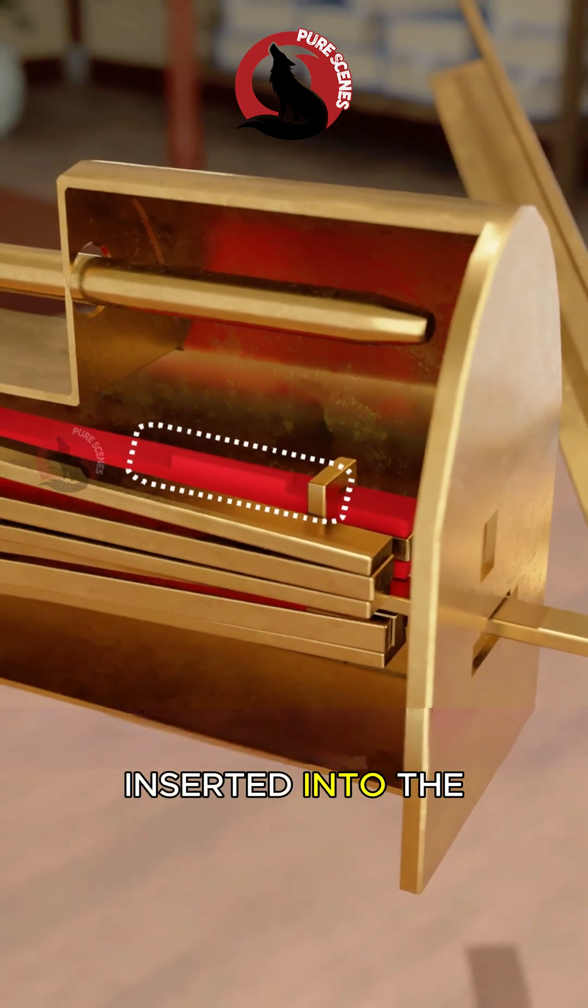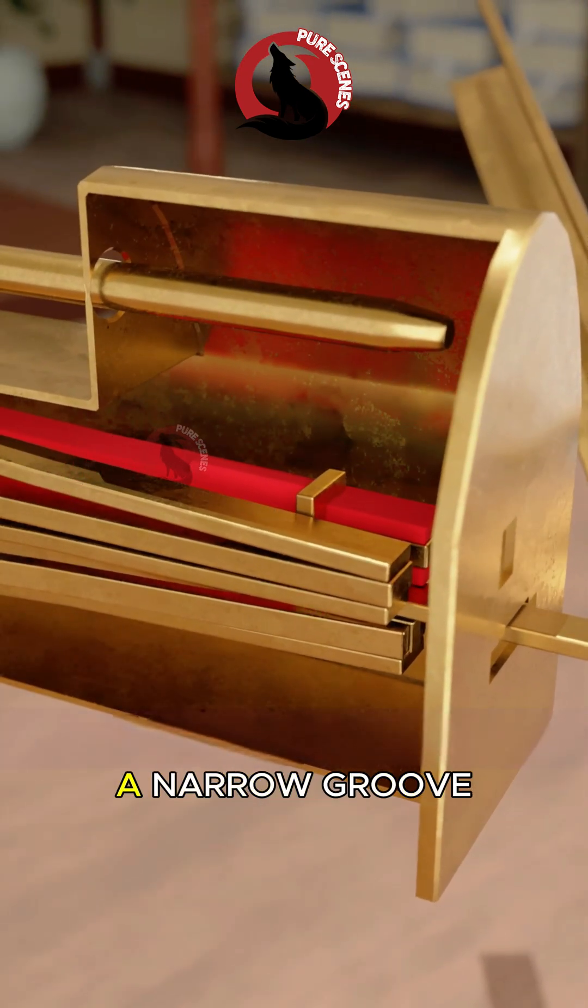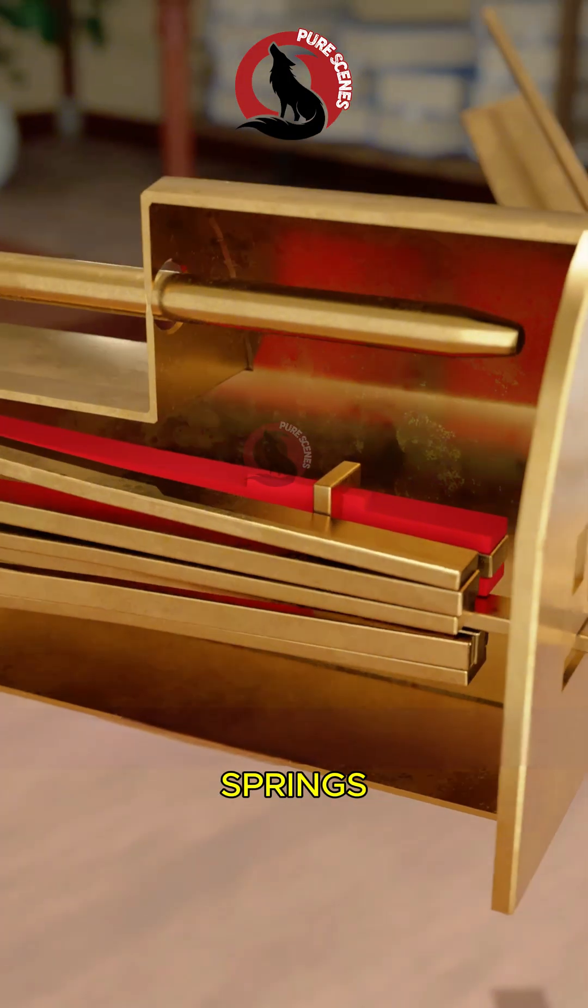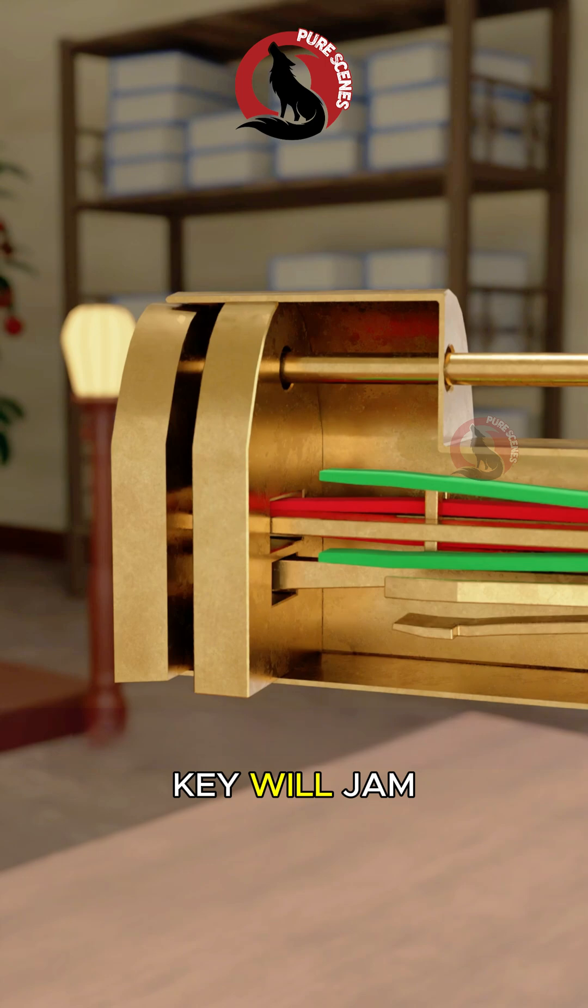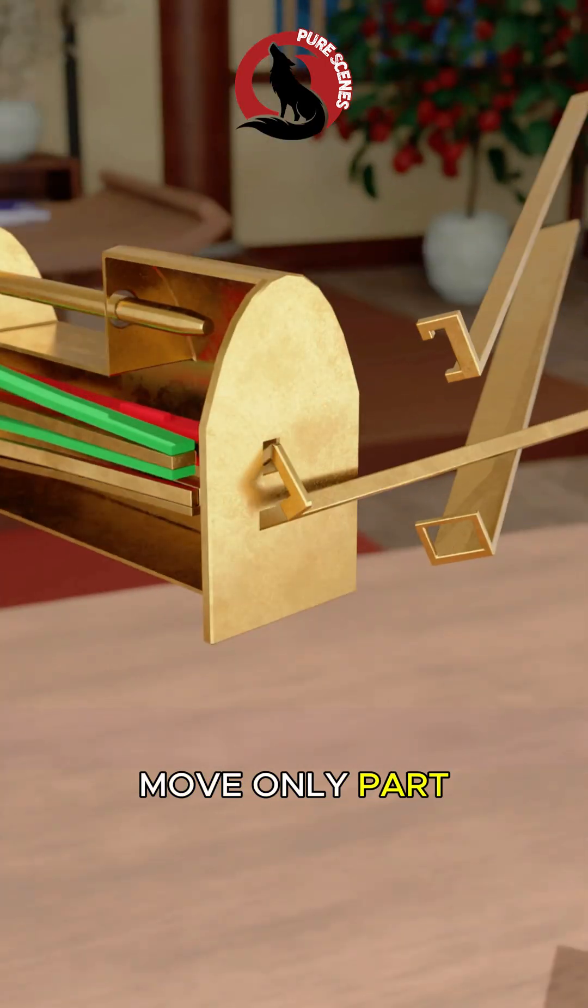Step one, the first key is inserted into the lower keyhole and guided along a narrow groove to catch the first group of springs. The spring tips have raised sections so any incorrect key will jam. This step allows the bolt to move only part way.